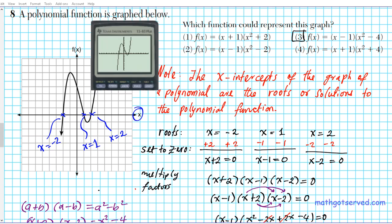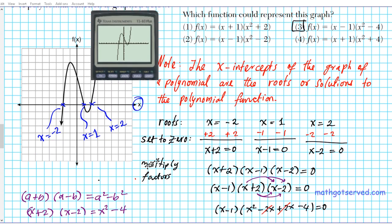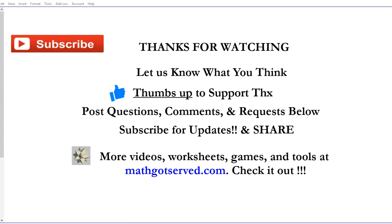Some of you might wonder: isn't it much easier or faster to use a calculator to determine if a function has a particular graph? That raises the question: if you can simply use a graphing calculator to establish what a function looks like, is it necessary to be able to determine this algebraically or manually? All this work we did to come up with the final answer — is that necessary with the availability of a calculator? Let us know what you think in the comment section.